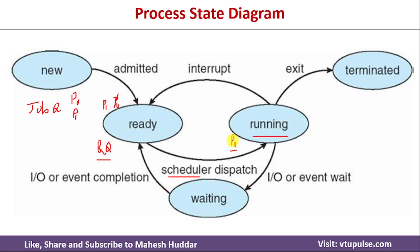If P0 makes an IO request — waiting for an input or output device or some event — P0 is removed from the CPU and placed into the waiting state. Now the CPU is free, so P1 is removed from the ready queue and allocated CPU time. If P1 generates an IO event, it is also placed in the waiting queue. When P0's IO event completes, it is brought back into the ready queue, waiting for CPU again.